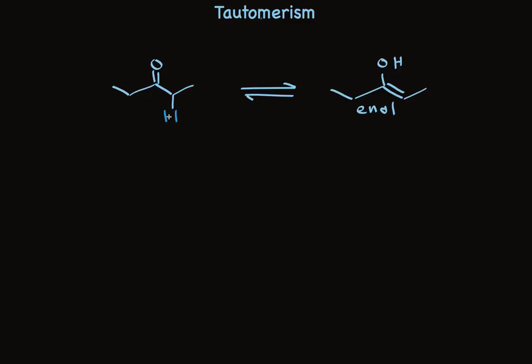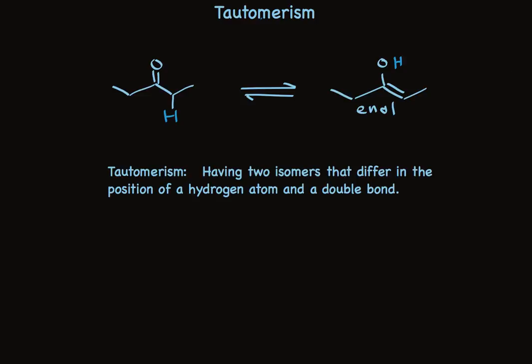These two isomers are related by a change in the position of the hydrogen and the double bond in the molecule. The hydrogen, I've shown in blue on the left, is removed, and a hydrogen appears on the oxygen. The double bond shifts. So tautomerism is having two isomers that differ in the position of a hydrogen atom and a double bond.